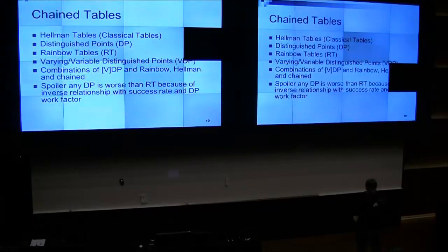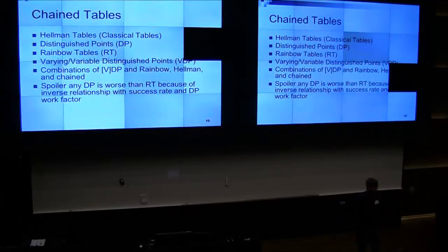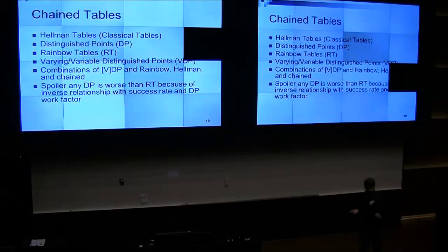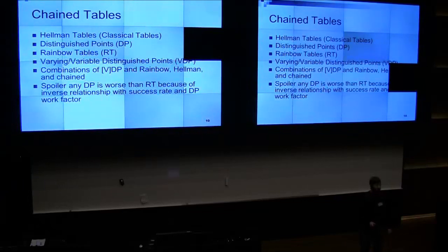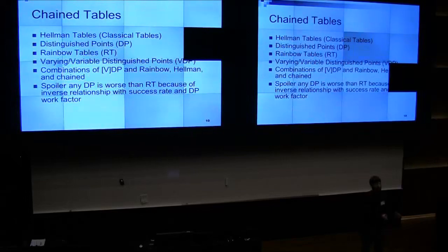The way distinguished points work: you have a start point, an average chain length you want, and then two bounds you can move. If you start constricting it, if you generate a chain that ends before the minimum, you just throw it away; if it goes past the maximum, you throw it away. As you get closer and closer, the success rate increases. But you want it closer to average so that when you're using the table, it's faster — there's this inverse relationship.